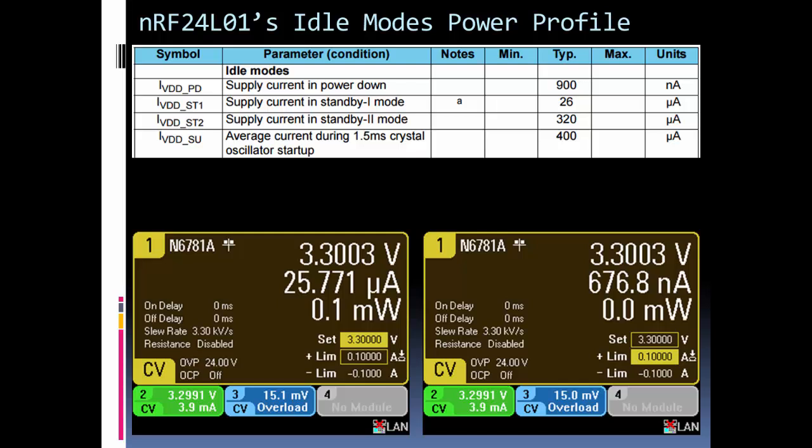I should say standby-1 mode. And you can see it's drawing close to the typical value of 26 microamps, it's drawing about 25.8 microamps. So pretty accurate according to the data sheet.